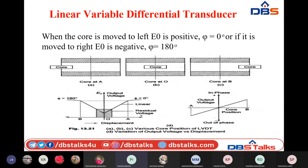When E₀ is positive — core moved left — the output voltage is in phase with the applied source at the primary winding, meaning zero degree phase difference. When E₀ is negative — core moved right — the output voltage is 180 degrees out of phase with the applied current source.